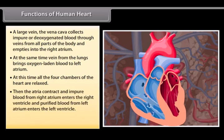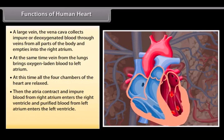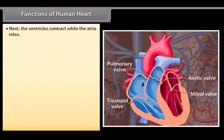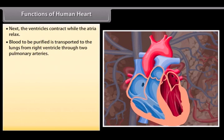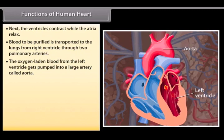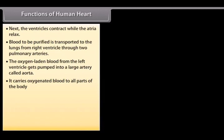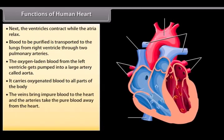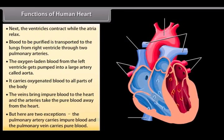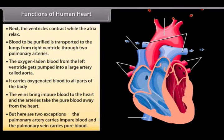Then the atria contract and impure blood from right atrium enters the right ventricle and purified blood from left atrium enters the left ventricle. Valves within the heart prevent blood from flowing back. Next, the ventricles contract while the atria relax. Blood to be purified is transported to the lungs from right ventricle through two pulmonary arteries. The oxygen-laden blood from the left ventricle gets pumped into a large artery called aorta. It carries oxygenated blood to all parts of the body. The veins bring impure blood to the heart and the arteries take the pure blood away from the heart. But there are two exceptions. The pulmonary artery carries impure blood and the pulmonary vein carries pure blood.